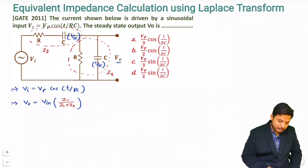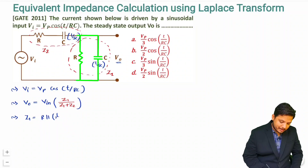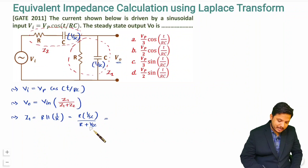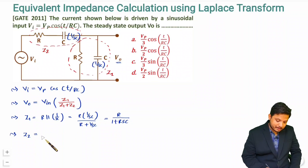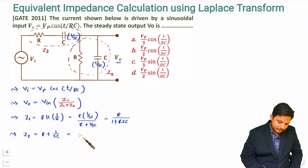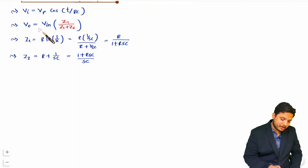Let us separately calculate Z1 and Z2. Z1 is R in parallel with 1/sC, which gives (R × 1/sC) / (R + 1/sC). Taking sC as the LCM, this simplifies to R / (1 + RsC). For Z2, R is in series with 1/sC, giving R + 1/sC, which simplifies to (1 + RsC) / sC.